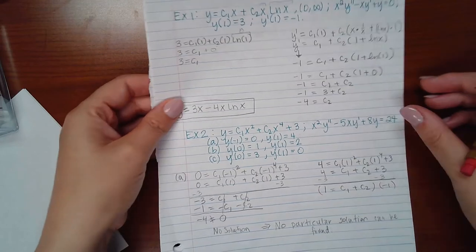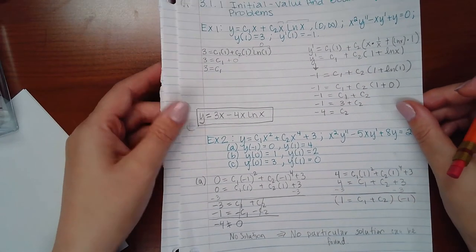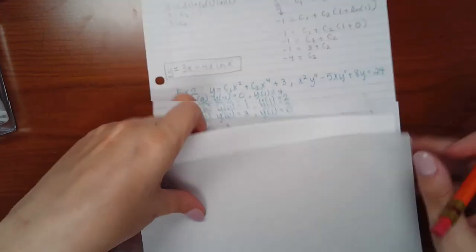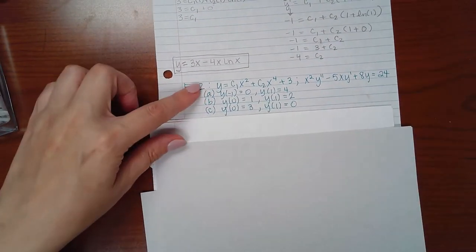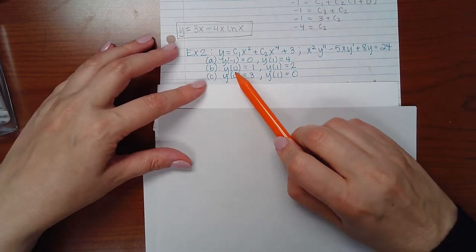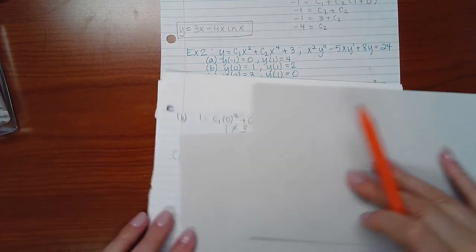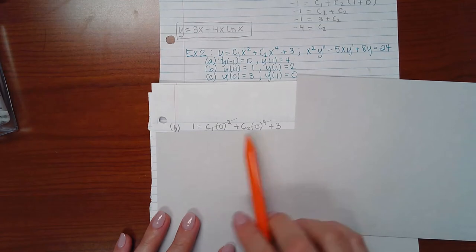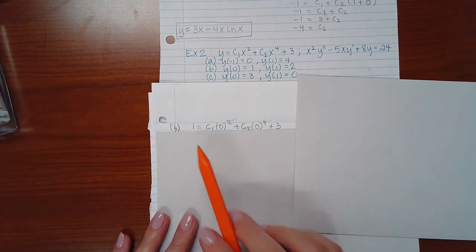Now we can try part B and see if those boundary values will give us anything. So let's take a look at that. Now I am going to use this here because this does have my function and my boundary values. So now when X is equal to 0, my Y value should be 1. So when I plug in 0 for X, I should get 1 for Y.